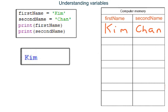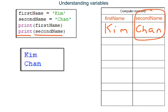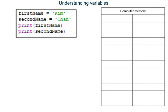Line 4 looks up what has been stored inside variable second name and then outputs it on the screen. Chan is in variable second name, so Chan is output. The program has now finished running, so the variables and everything in them are deleted from the computer's memory.